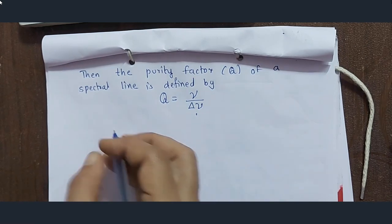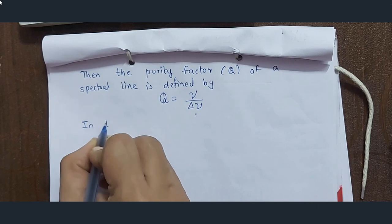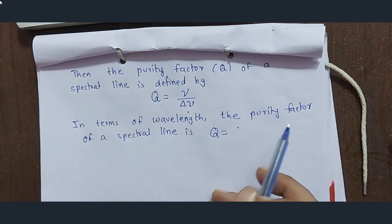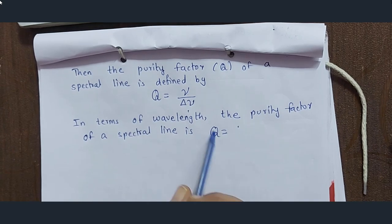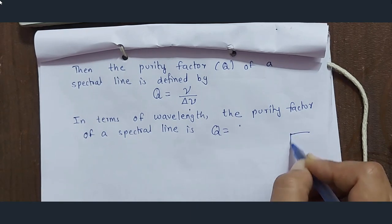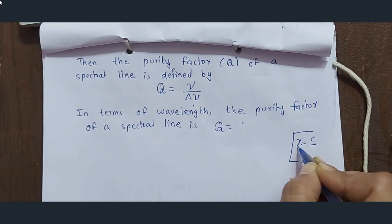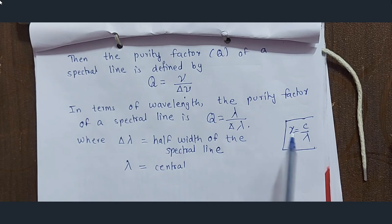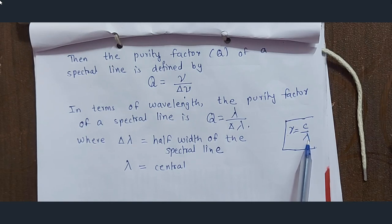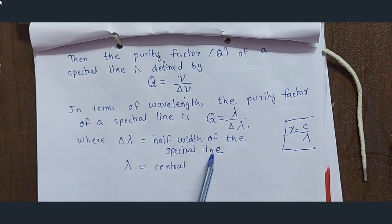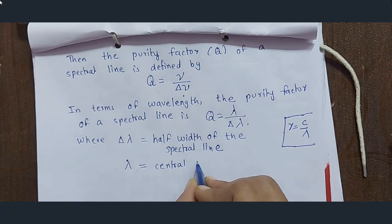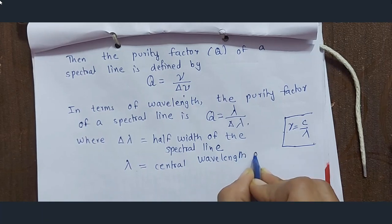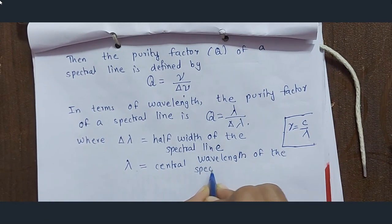We have written this in frequency terms. We can also write this in wavelength terms. Since nu is equal to c by lambda, in terms of wavelength the purity factor of the spectral line is Q is equal to lambda upon delta-lambda, where delta-lambda is the half width of the spectral line and lambda is the central wavelength of the spectral line.